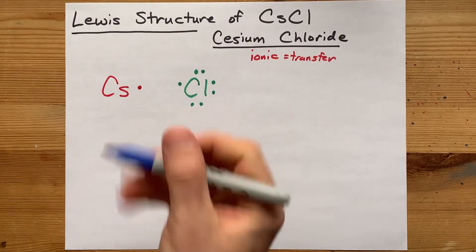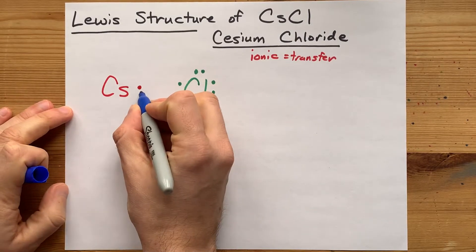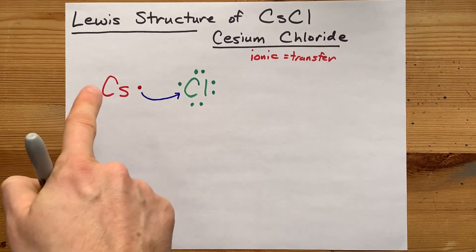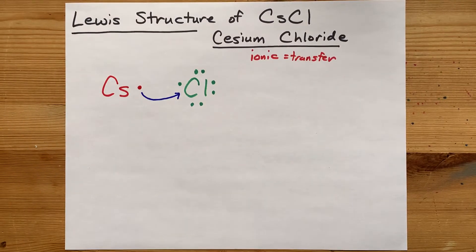So what happens? Cesium, a metal, gives up its electron to chlorine. It's always the metals giving up their electrons to non-metals.